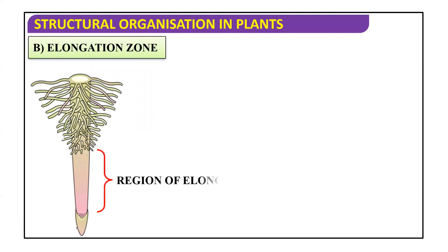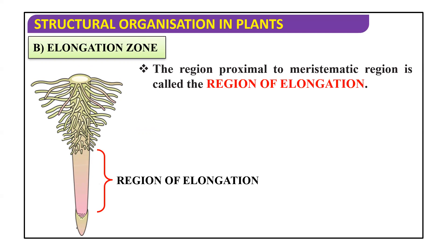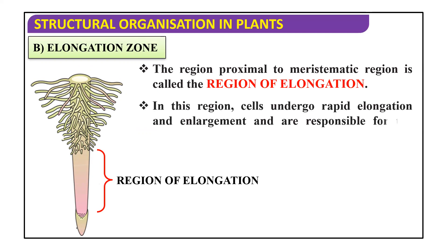The third region is the elongation zone. This is the region just above the meristematic zone. The region proximal to the meristematic region is called the region of elongation. In this region, cells undergo rapid elongation and enlargement and are responsible for the growth of the root in length. The meristematic zone was the dividing region, where cells divide.